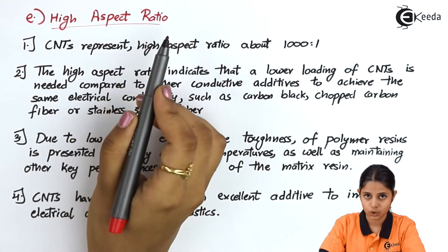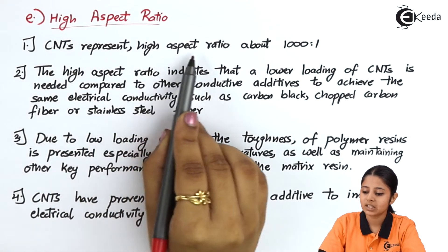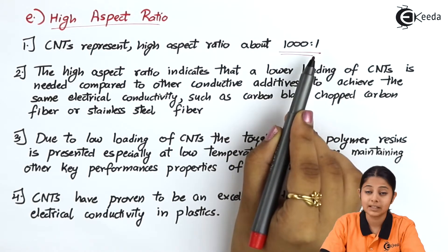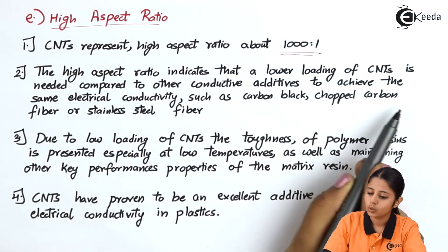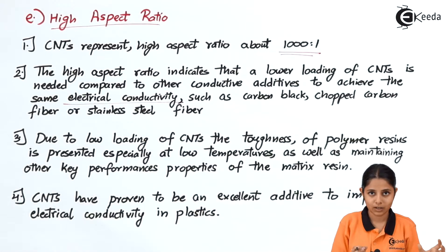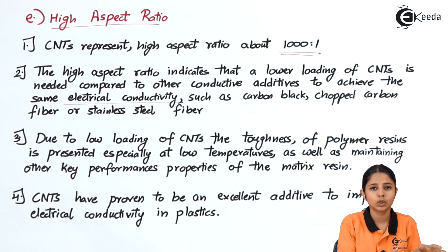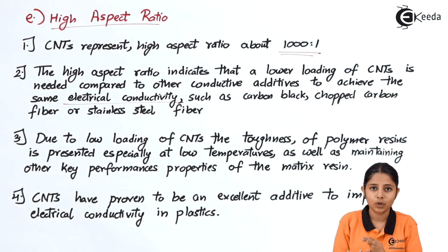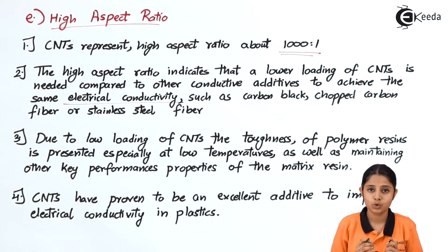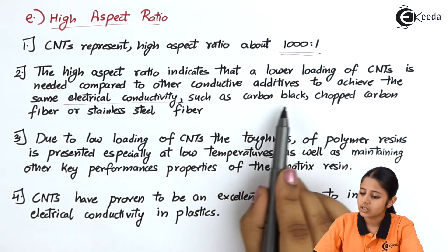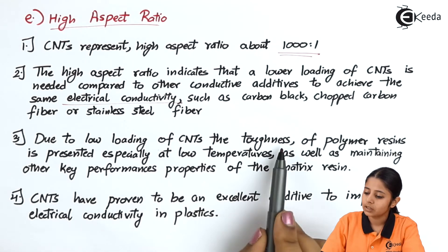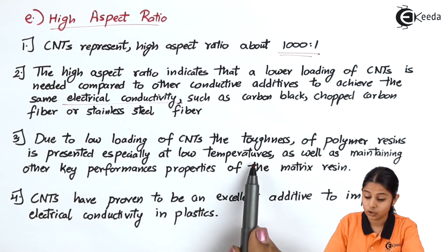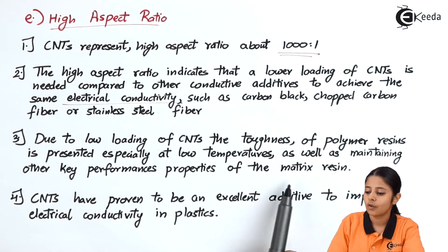Carbon nanotubes have a high aspect ratio of about 1000:1, which is extremely high. This high aspect ratio means that a lower loading of carbon nanotubes is needed compared to other conductive additives — such as carbon black, chopped carbon fiber, or stainless steel fiber — to achieve the same electrical conductivity. At low temperatures they also exhibit superconductivity. Due to this low loading, the toughness of polymer resins is preserved, especially at low temperatures, while maintaining other key performance properties of the matrix resin.